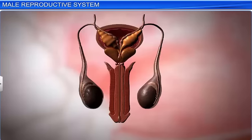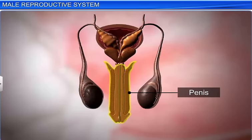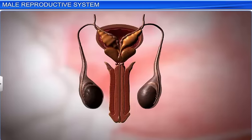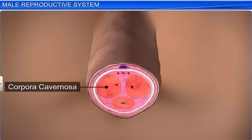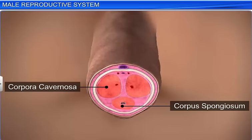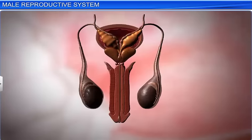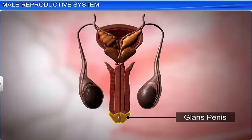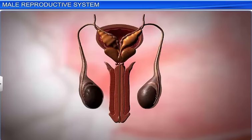The external genitalia in males is called the penis. The penis is a copulatory organ and is covered by a loose sheath of skin. The skin that hangs over the tip of the penis is known as the prepuce, or foreskin. It is made up of special tissues like corpora cavernosa and corpus spongiosum. The tip of the penis, covered by the prepuce, is called the glans penis. The penis, urethra, vas deferens, and Cowper's gland together help in copulation and in the deposition of sperm within the female.